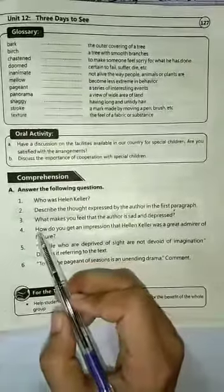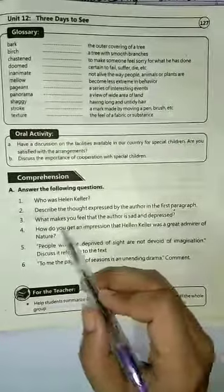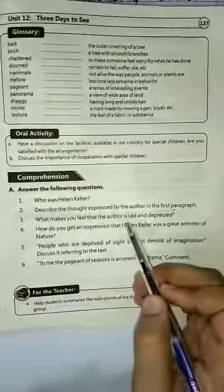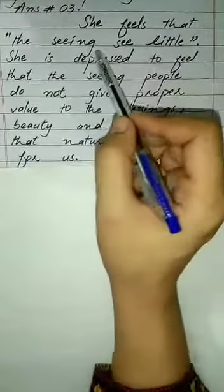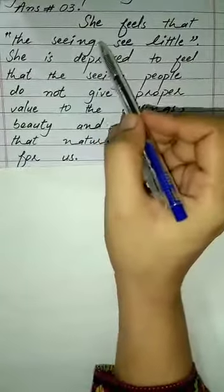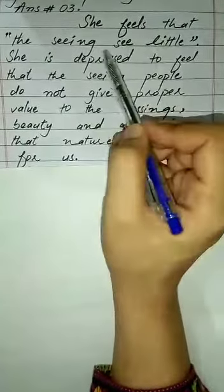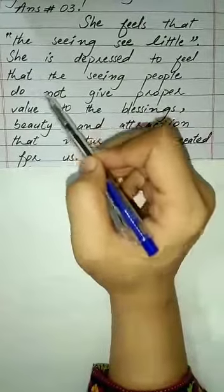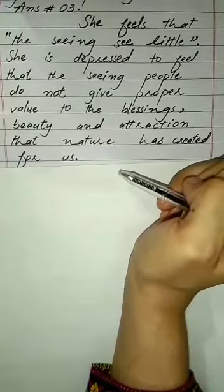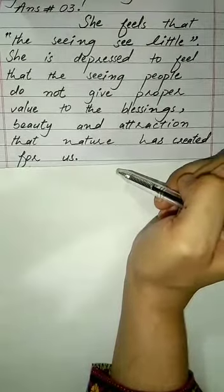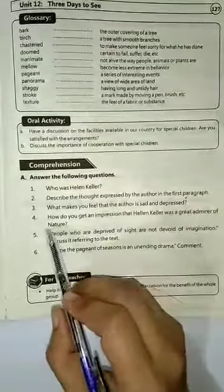Third question: what makes you feel that the author is sad and depressed? The answer is she feels that the seeing sees little. She is depressed to feel that the seeing people do not give proper value to the blessings, beauty, and attraction that nature has created for us.